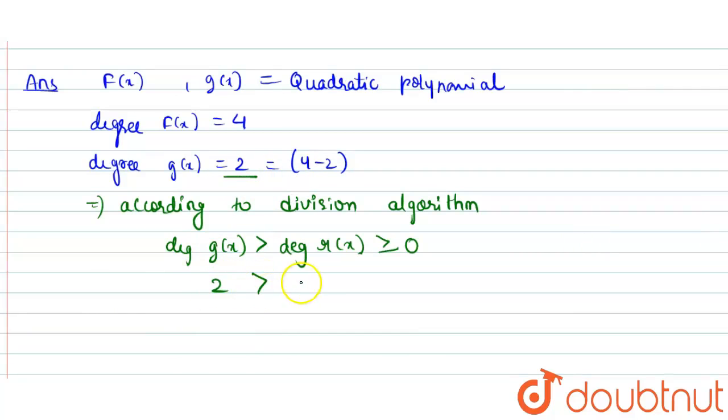So I'll write it over here, 2, and degree of r of x we have to find out. So from this we can easily say that the degree of the remainder, that is r of x, should be less than 2.